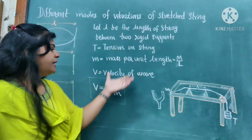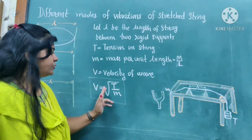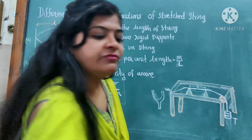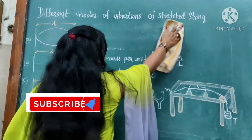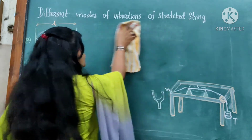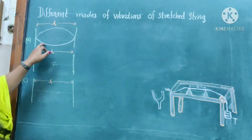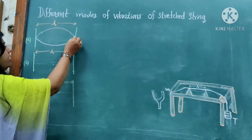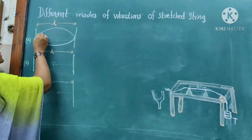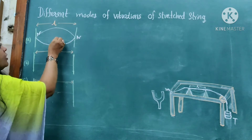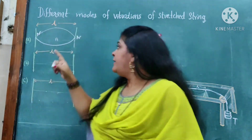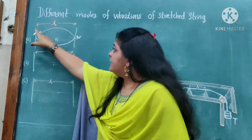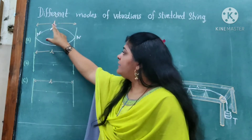Now students, we have already learned this part. V is equal to square root of T upon m. First we are obtaining the formula for the fundamental frequency. For the fundamental frequency, we start with the first diagram — the first mode of vibration. In between the two rigid supports, the wire starts vibrating having length l. When the incident wave is reflected back, then the node is formed at the rigid support and the antinode is formed at the center of the wire. The length of the wire is denoted by small l.